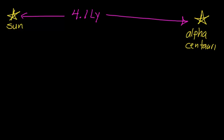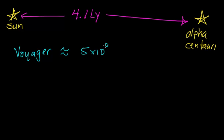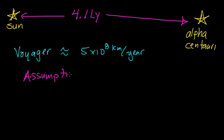To calculate the distance, we're going to assume the speed that one of the fastest human-made objects is traveling — a spacecraft known as the Voyager spacecraft — traveling at a constant velocity of about 5 times 10 to the 8th kilometers per year. One of our assumptions is going to be that this Voyager spacecraft is traveling in a straight line towards Alpha Centauri.